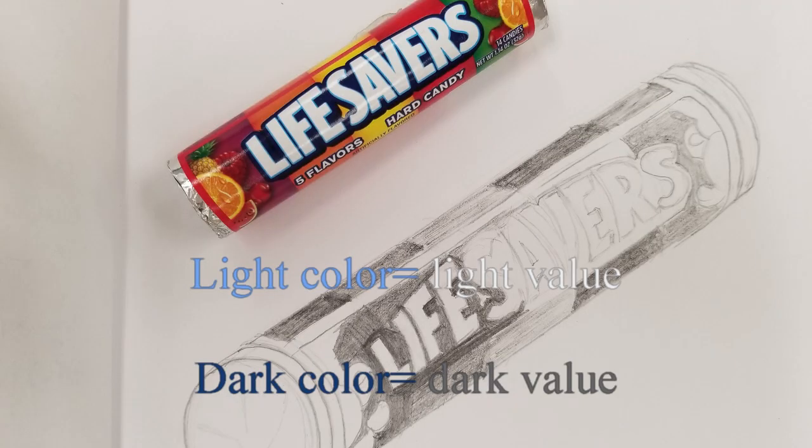Artists use this concept of value when they're creating their artworks, whether it's a drawing or a painting. The lightest colors get converted into the lightest values and the darkest colors get converted into the darkest values. We're going to explore that a little bit today with a couple of exercises that will get you thinking about color and value and putting them together.